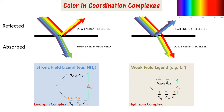What gives coordination compounds their characteristic color? Strong field ligands create a high crystal field splitting energy. When light falls on such compounds, the electrons absorb the high energy wavelengths to jump to the next energy level. The low energy wavelengths which are not absorbed are reflected back, and this is what is seen as the characteristic color for low spin complexes.